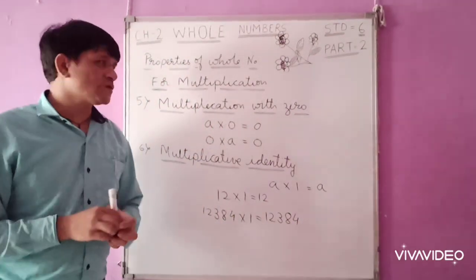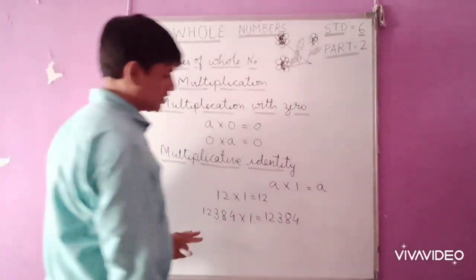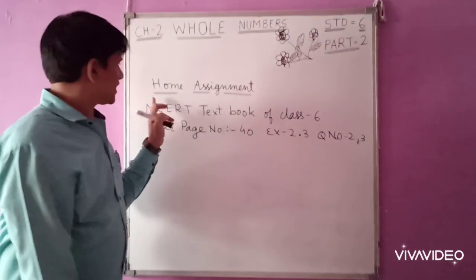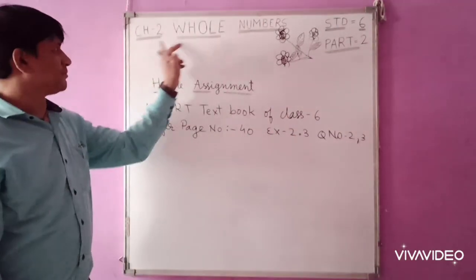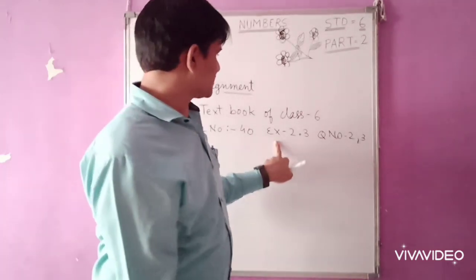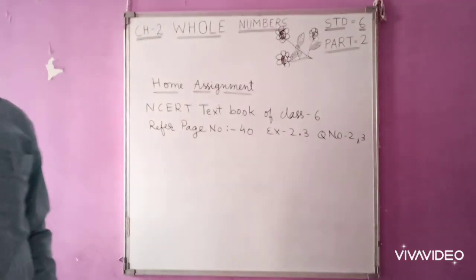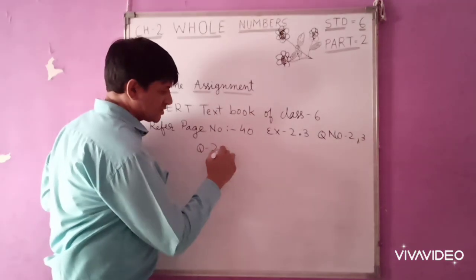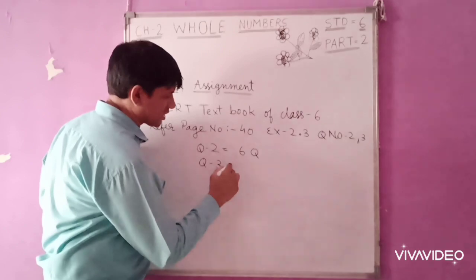That is all for this part of the video. Now for your take-home assignment: refer to the NCERT textbook of Class 6, Chapter 2 Whole Numbers, page number 14, Exercise 2.3, Questions 2 and 3. Question 2 has 6 sub-questions and Question 3 has 4 questions, making a total of 10 questions.